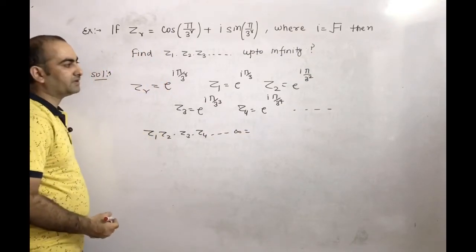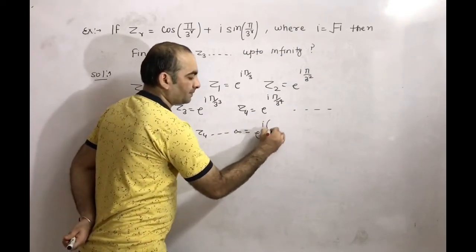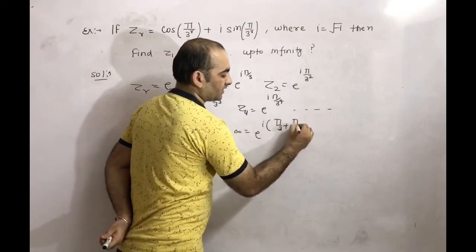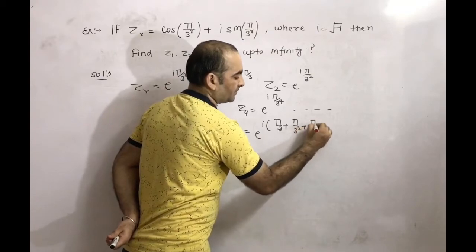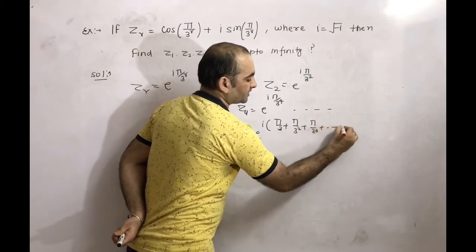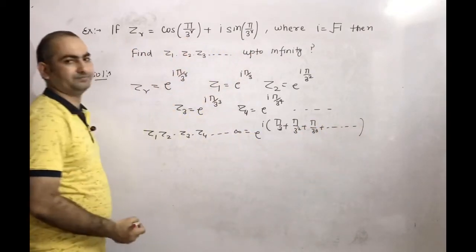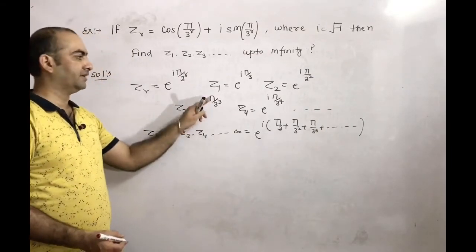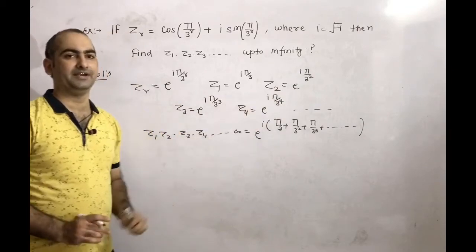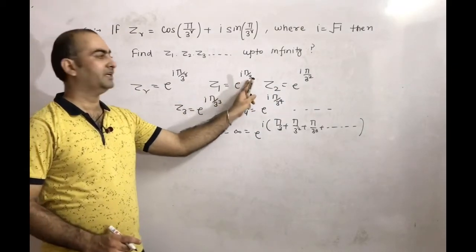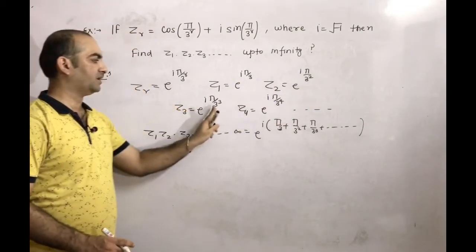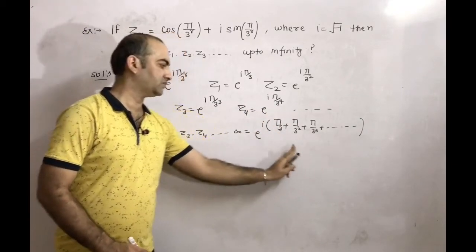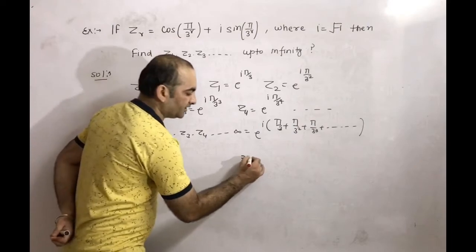So the product gives e^(i·(π/3 + (π/3)² + (π/3)³ + ... till infinity)). We are using Euler's property: every argument gets added. The argument is π/3, then (π/3)², then (π/3)³, then (π/3)⁴, so we add all the arguments. This gives e^(i·π/3·(1 + 1/3 + 1/3² + ... till infinity)).